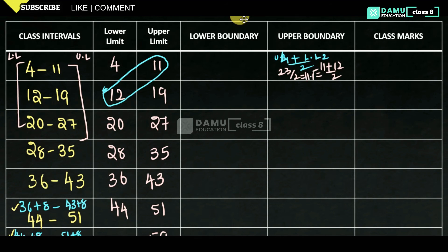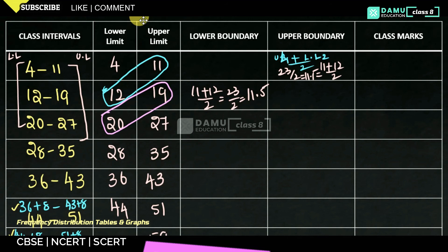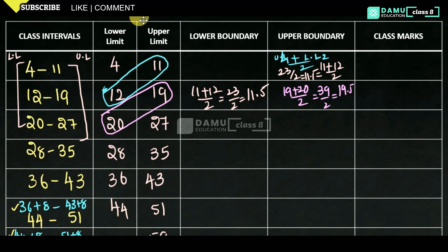For the second class interval, the upper boundary is (19 + 20) / 2 = 39 / 2 = 19.5. We can observe a pattern: for upper limits, add 0.5; for lower limits, subtract 0.5. So 20 minus 0.5 = 19.5. For the upper boundary of the second class, 27 + 0.5 = 27.5.